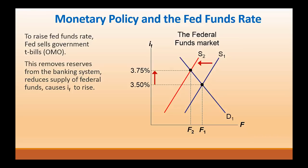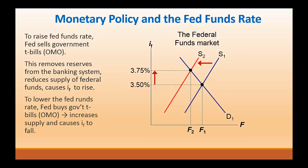Open market sales raise interest rates — not only on any kind of short-term bond, but here what the Fed is particularly targeting is the federal funds rate. To lower the federal funds rate, the Fed would buy government T-bills. This would increase the supply of federal funds and cause the federal funds rate to fall. So the Fed targets a particular rate and conducts open market sales and purchases to make sure that federal funds rate is met.